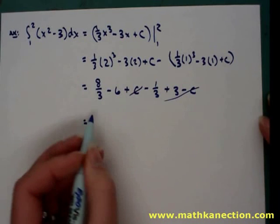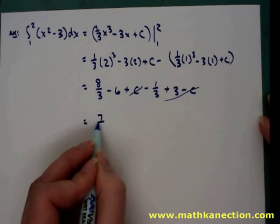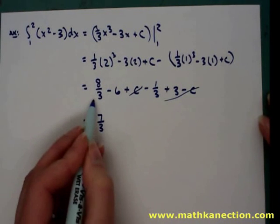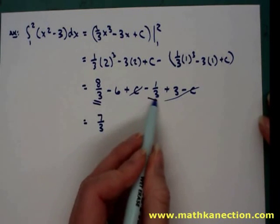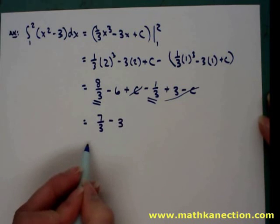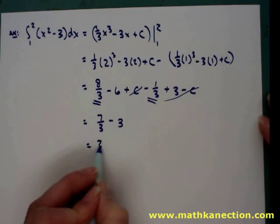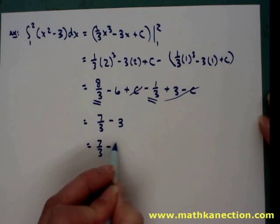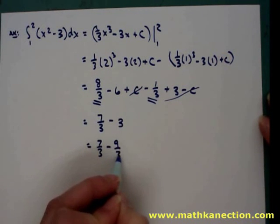The constants cancel out. Combining our like fractions together and our whole numbers together, then getting common denominators to arrive at our final answer.